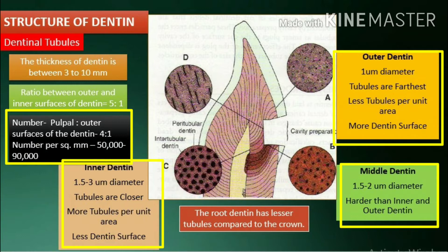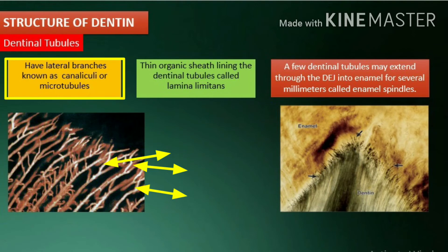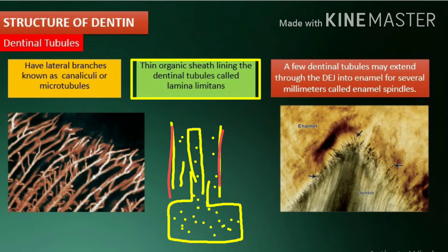The root dentin has fewer tubules compared to the crown. The dentinal tubules show more branching at their terminal parts. The lateral branches are called canaliculi or microtubules. These microtubules originate at right angles to the main tubules every 1 to 2 microns along its length.